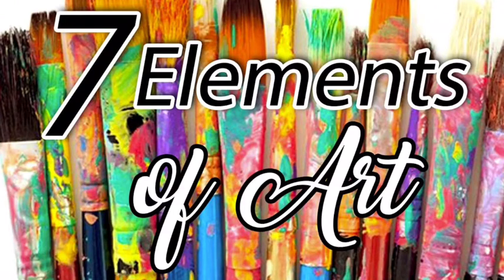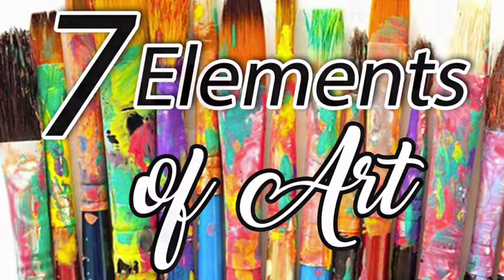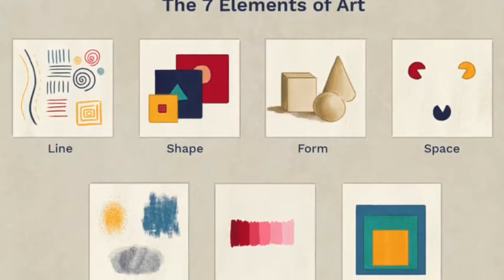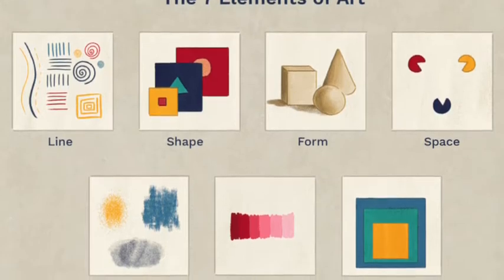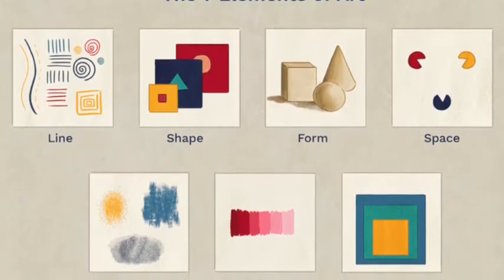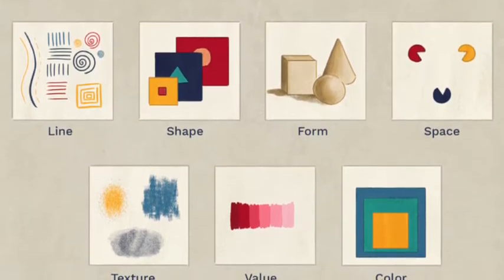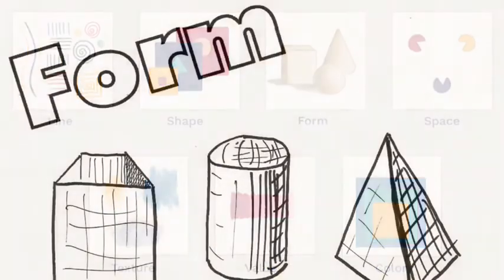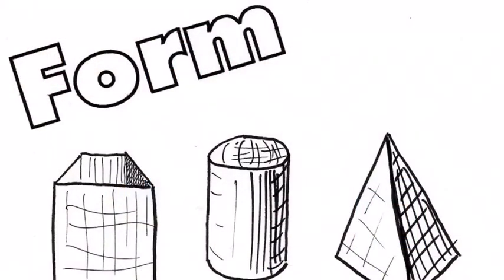Welcome back to art. We have been learning about seven elements of art. The elements of art are like the ingredients for making an artwork, which include line, shape, form, space, value, texture, and color. Today, let's focus on the element of form.